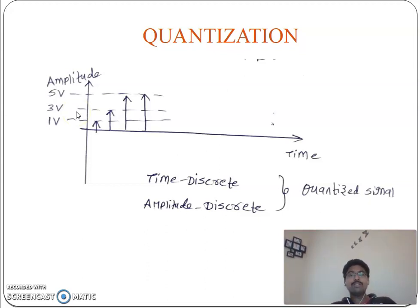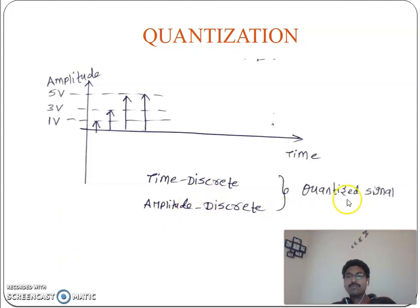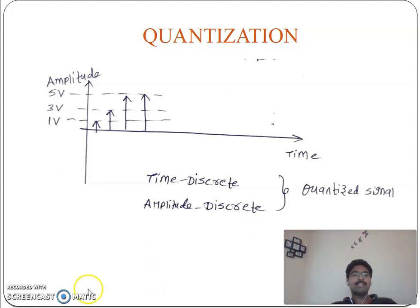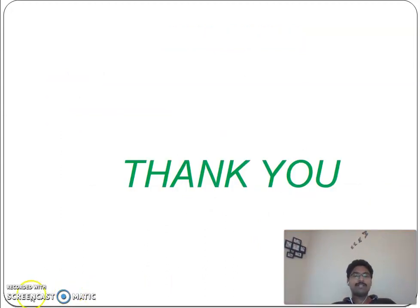We have to overcome those errors while converting the analog signal to a digital signal. In summary: continuous time and continuous amplitude — analog signal; discrete time and continuous amplitude — sampled signal; discrete time and discrete amplitude — quantized signal. Thank you very much.